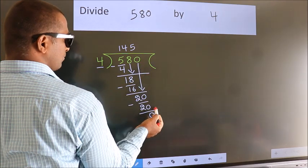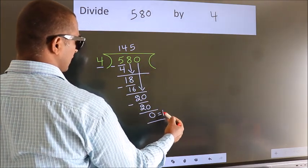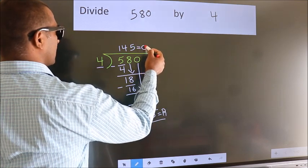No more numbers to bring down. So we stop here. This is our remainder. This is our quotient.